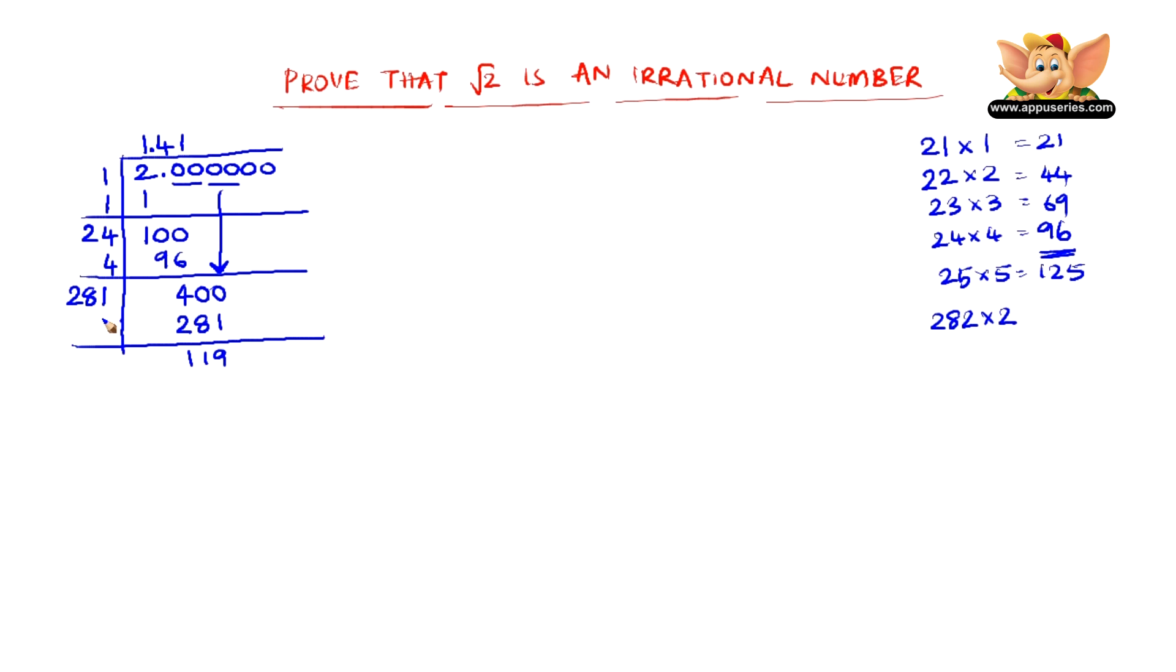Because if we write 2 in the place of 1 we get 282 into 2 which is clearly greater than 400. So therefore 281 into 1 gives us 281 and 400 minus 281 is 119, and 119 is clearly lesser than 281. We need to add this 1 here so we get 282, so the smallest number we can get here is 2821 which is way bigger than 119. So therefore we need to pull down another couple of 0s here.